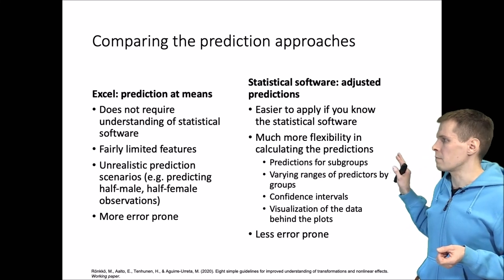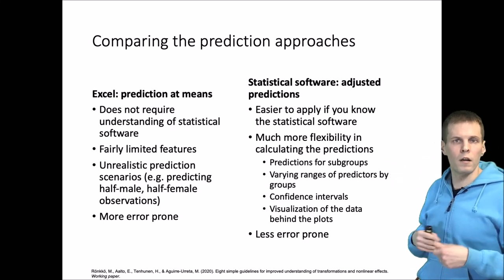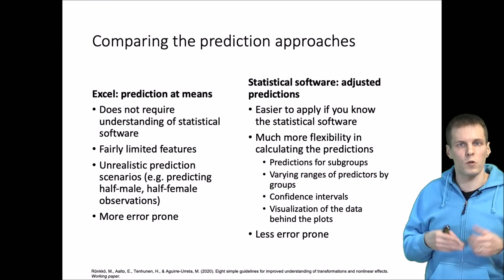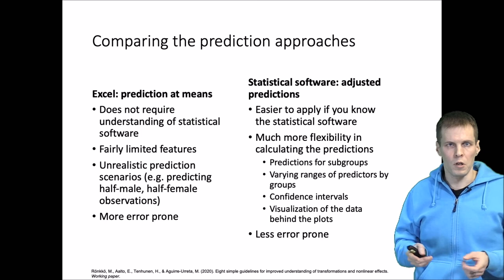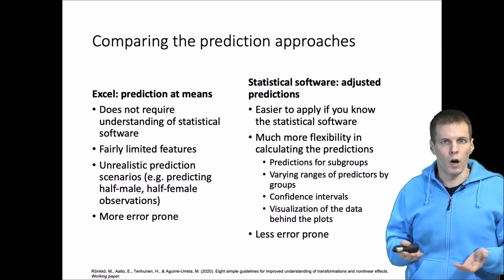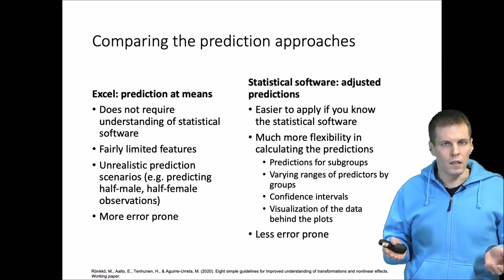They are much more flexible in calculating predictions. You can, for example, calculate predictions for subgroups. You can have different ranges of the covariates for different subgroups, so you wouldn't extrapolate beyond the data too much.